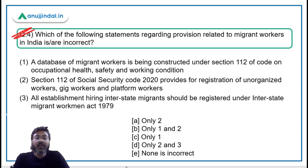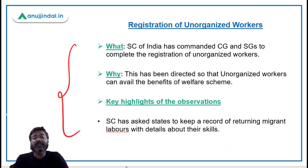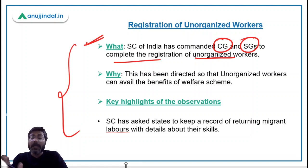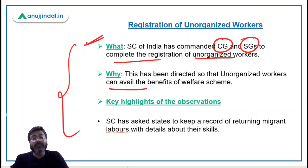Question 4 asks which statements regarding provisions related to migrant workers in India are incorrect. The relevant news is that the Supreme Court of India has directed the central government and state governments to complete the registration of unorganized workers as soon as possible. The main objective is that unorganized workers can avail the benefits of welfare schemes.